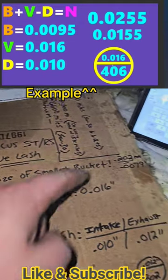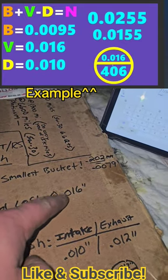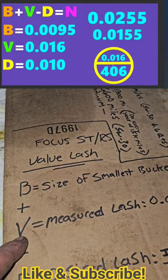You measure your valve lash with that bucket, which will be this number 16 thousandths. You add both of those together.